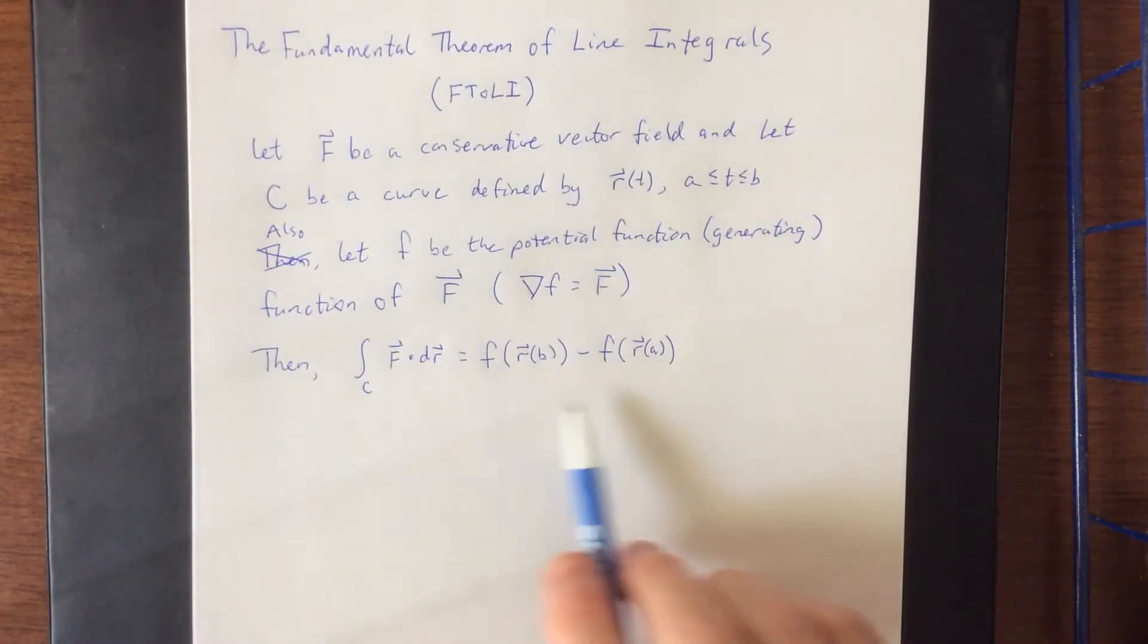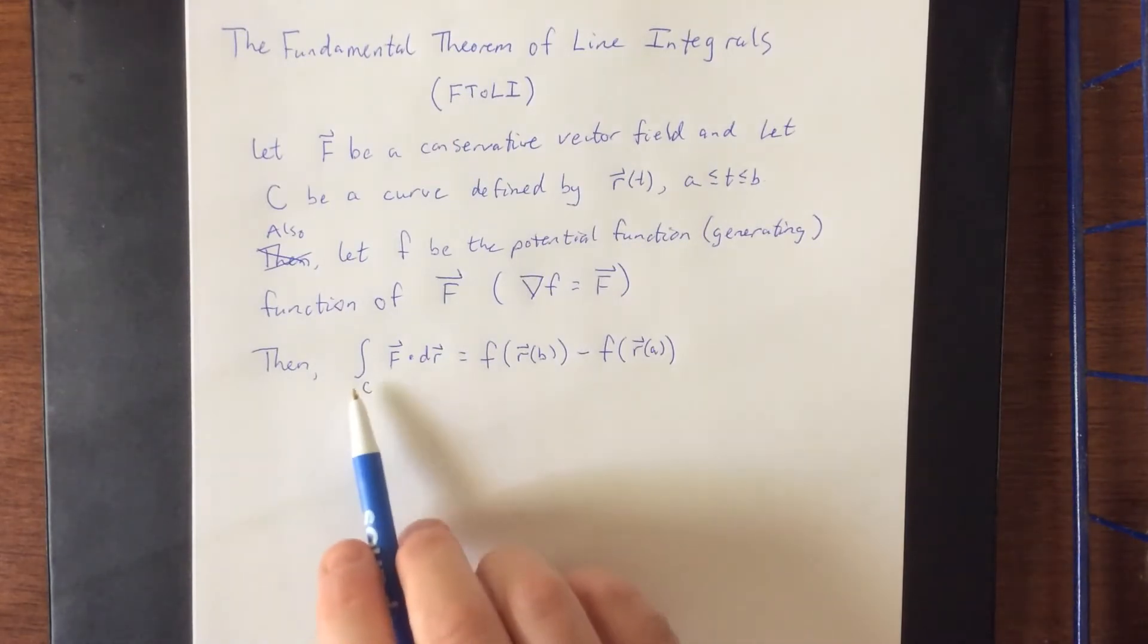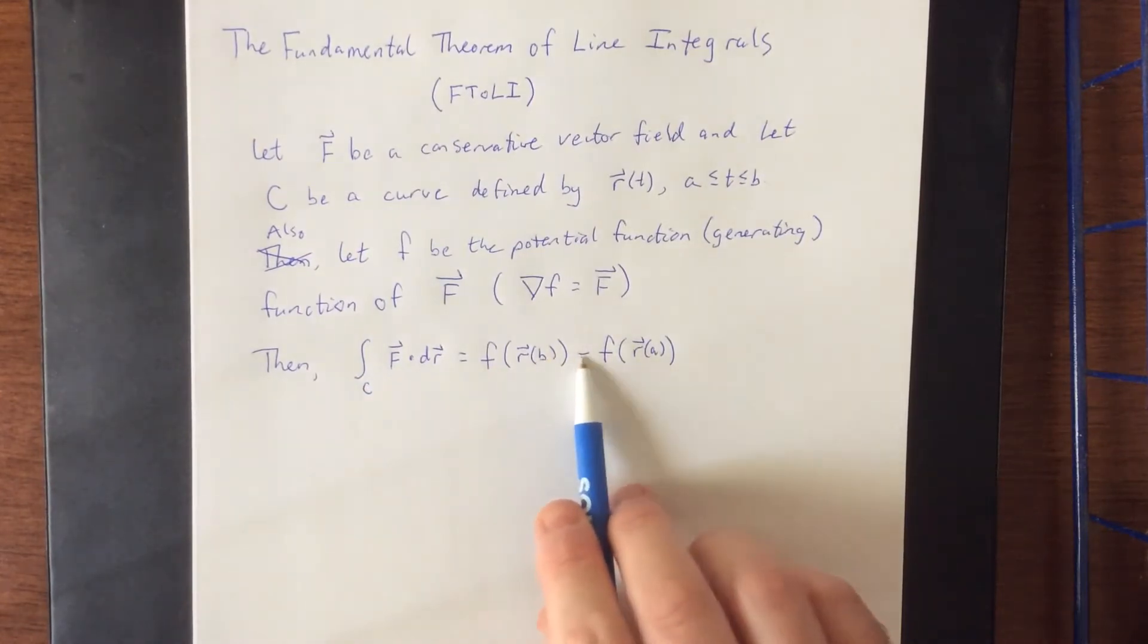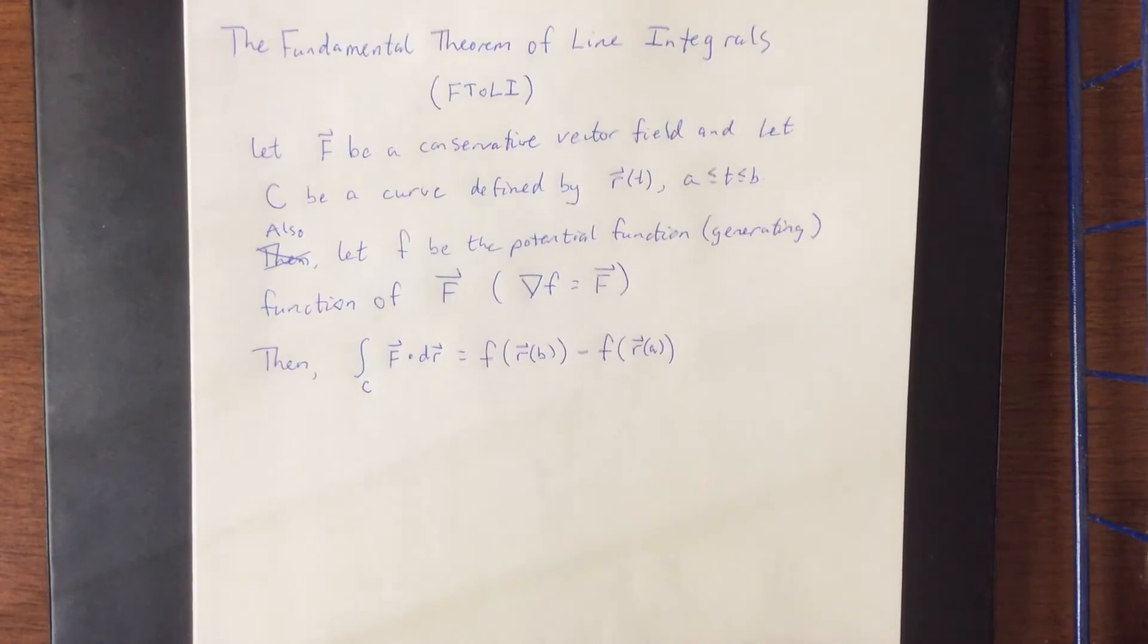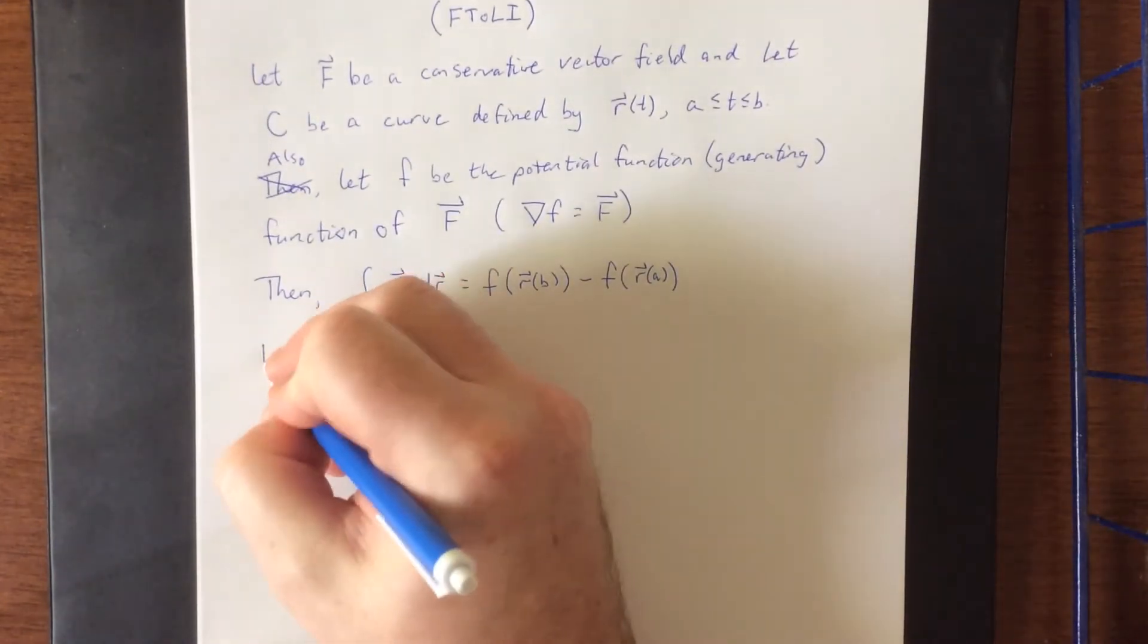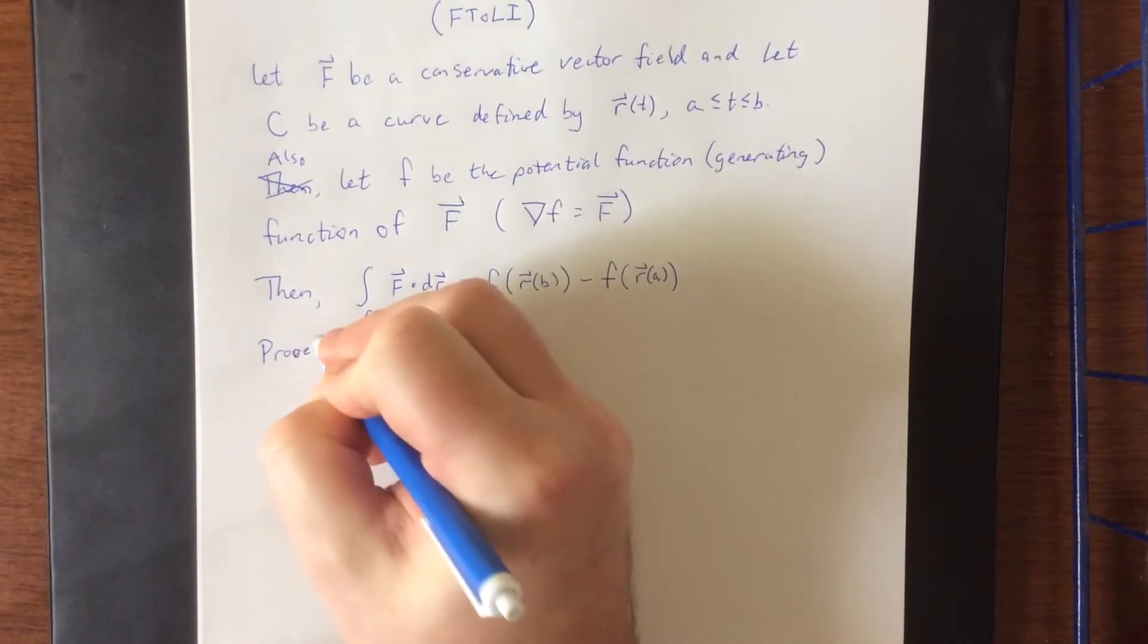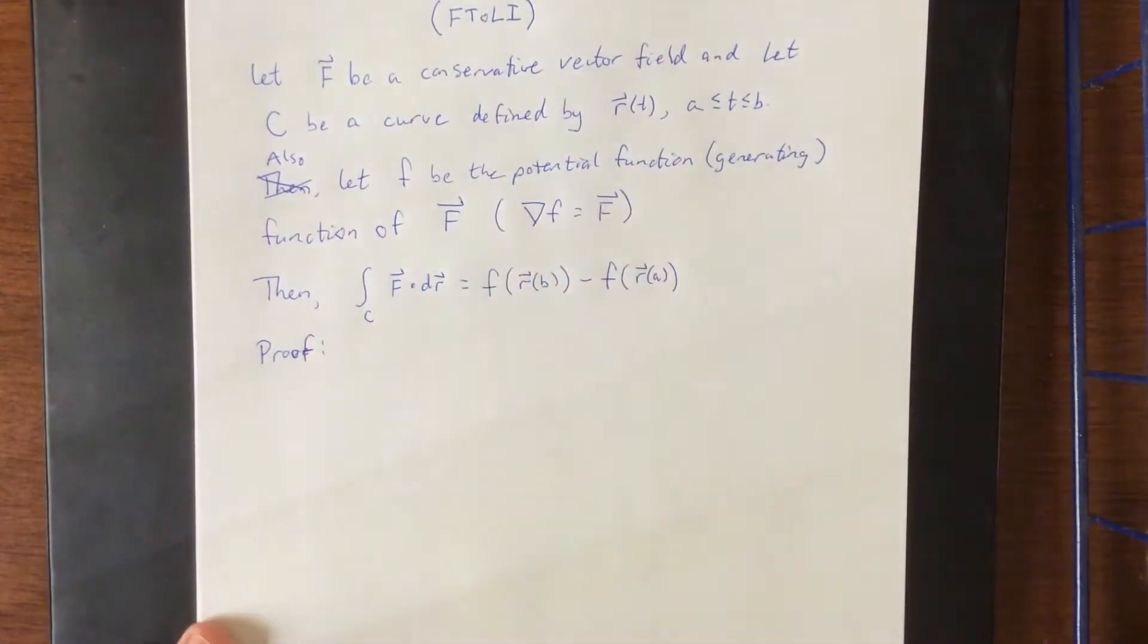Now, hopefully, this looks at least a little bit like the Fundamental Theorem of Calculus, in the sense that we're starting with an integral, and we're saying take this thing evaluated at B minus this thing evaluated at A. In fact, in order to prove the Fundamental Theorem of Line Integrals, we need to use exactly this fact. That's not how you spell proof. Let's try that again.